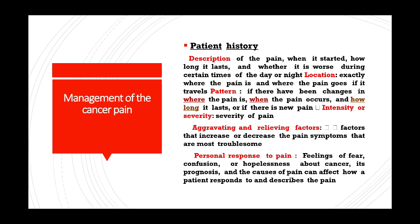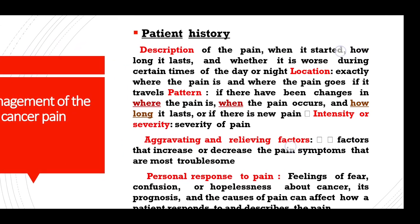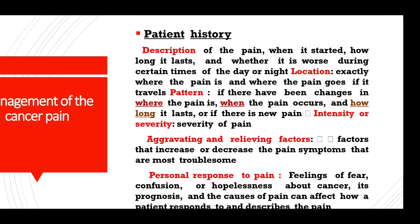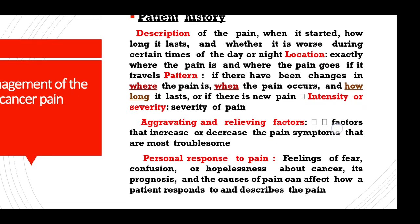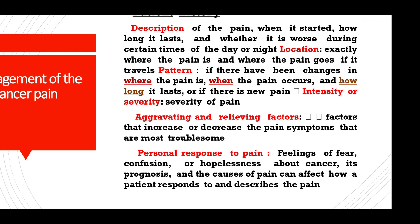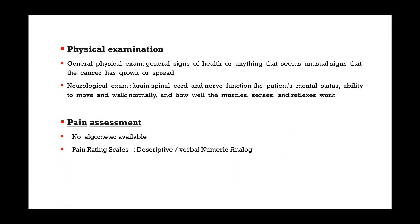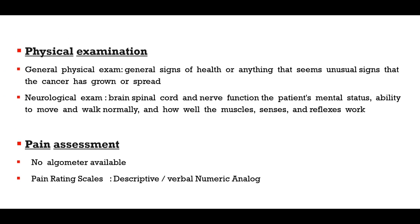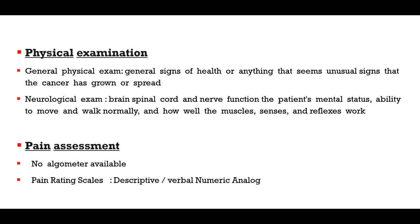Regarding management of cancer pain, like any patient suffering from pain, we take history, perform physical examination, and then prescribe appropriate treatment. The patient history for pain uses the SOCRATES framework: site, onset, character, radiation, aggravating and relieving factors. Also assessed are the personal response to pain such as feelings of fear, confusion, and hopelessness about cancer prognosis, as these affect how the patient responds and describes pain. Physical examination includes general signs of health as well as neurological examination covering sensory, motor, reflexes, and cranial nerve examination.